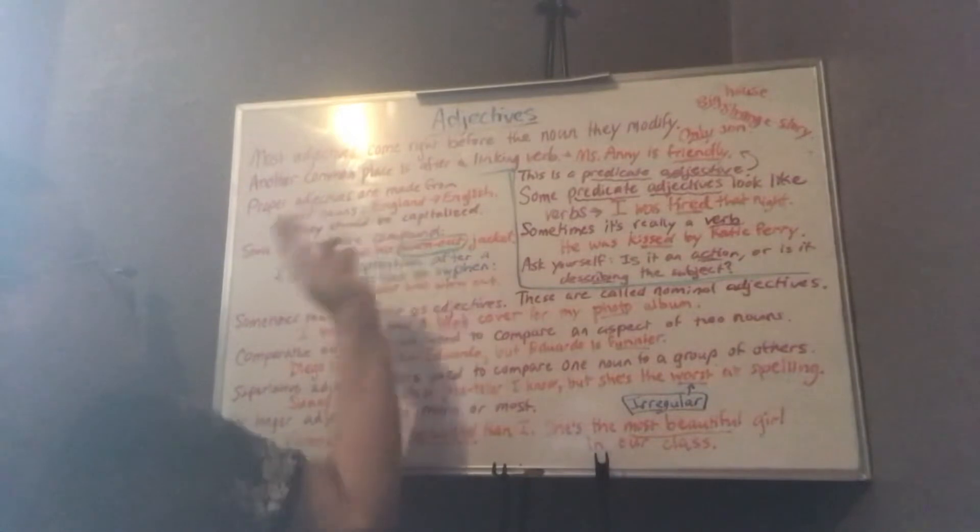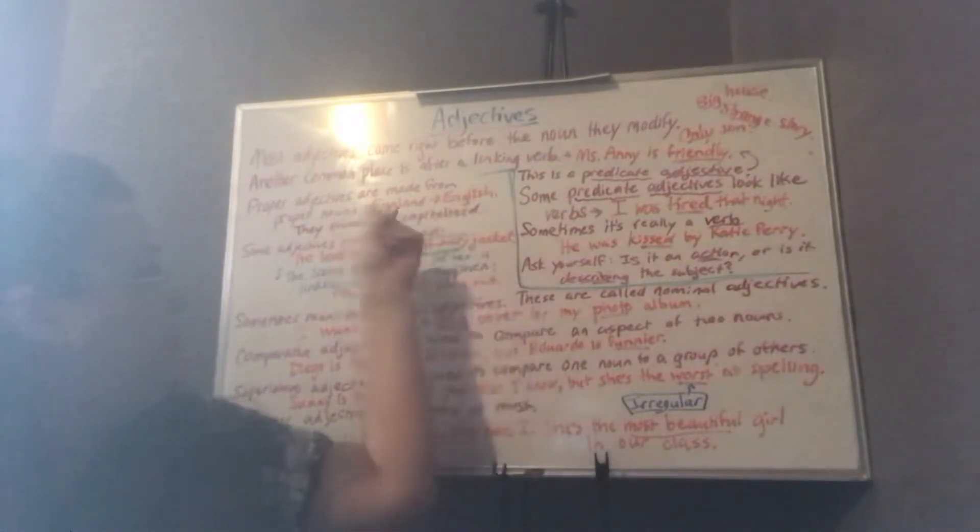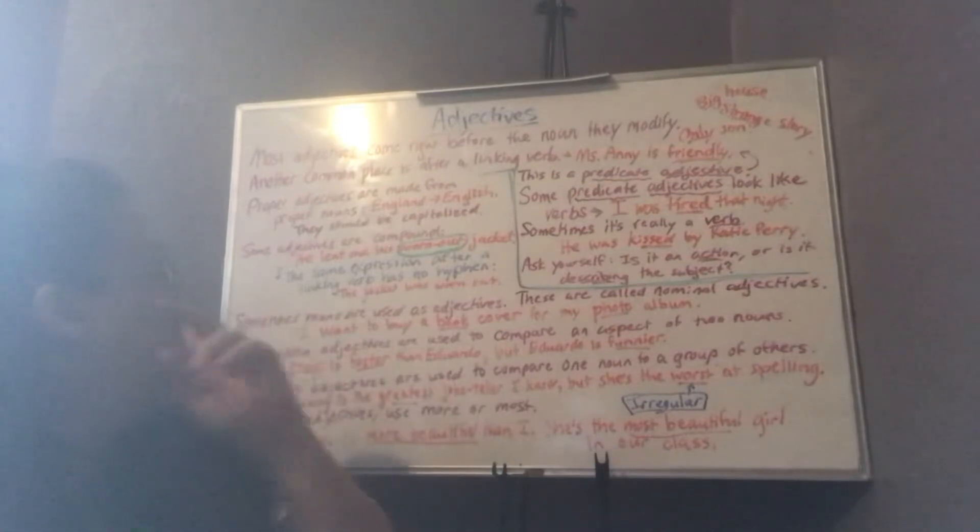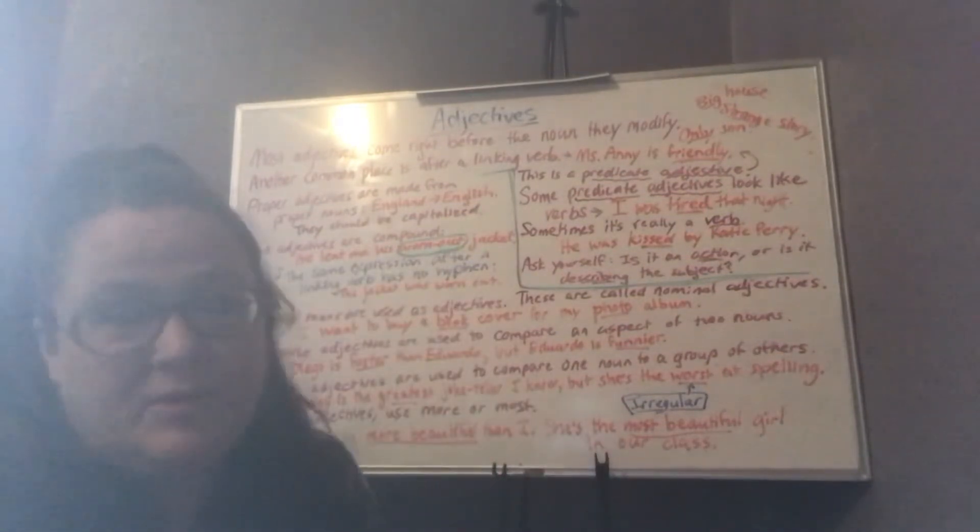Proper adjectives are made from proper nouns. For example, England can become English. The English language comes from England. Proper nouns and proper adjectives should be capitalized in English.